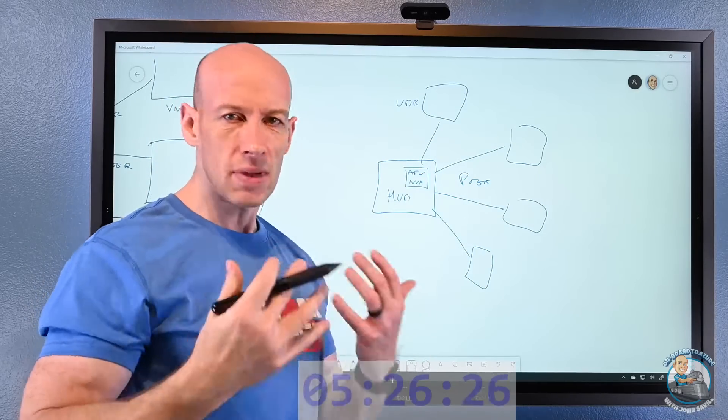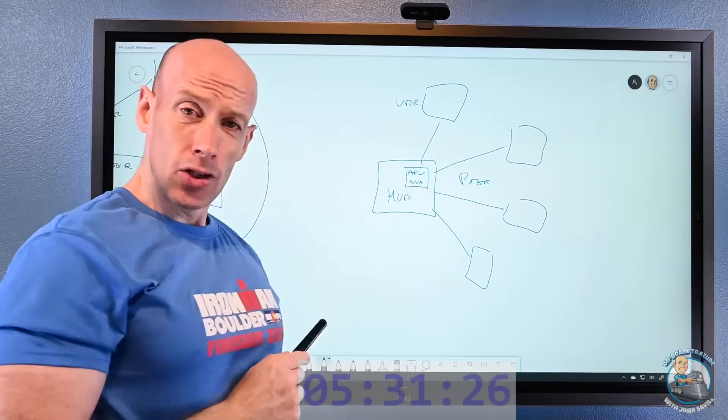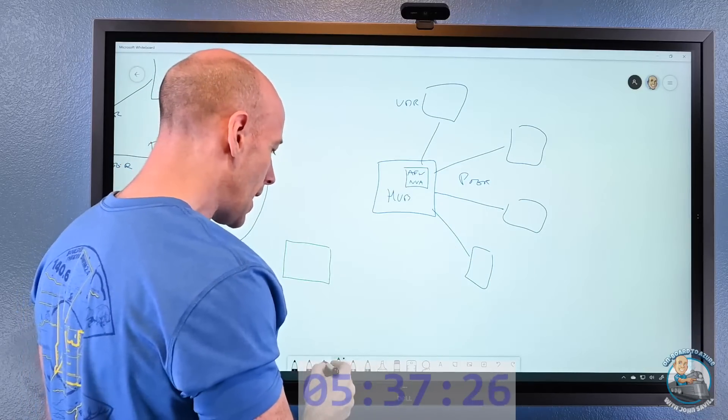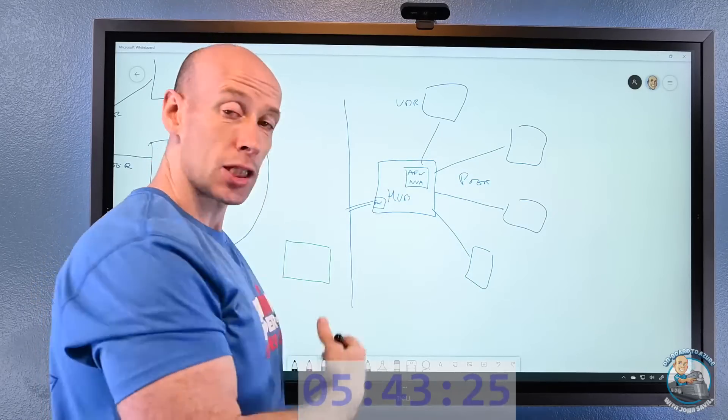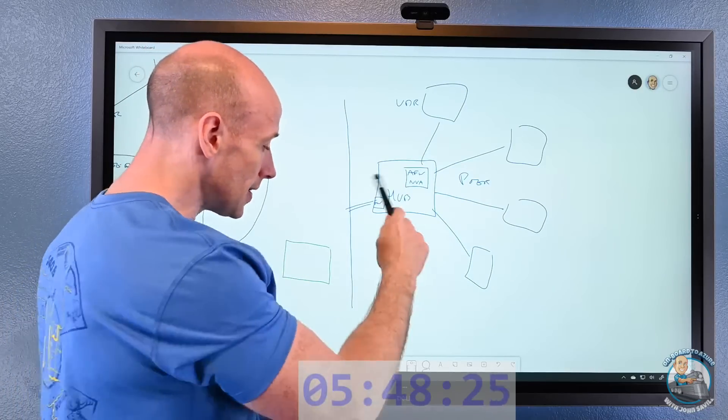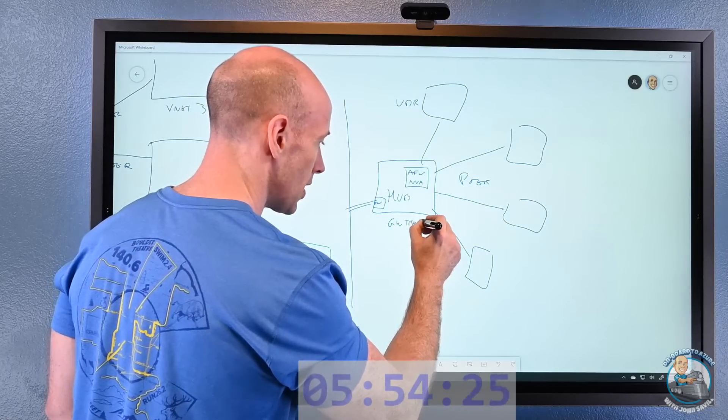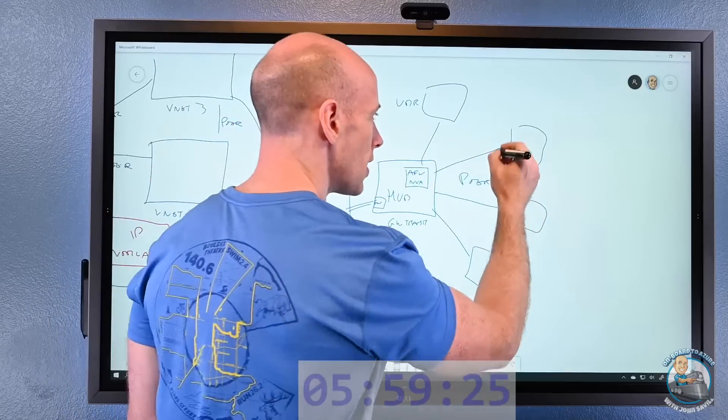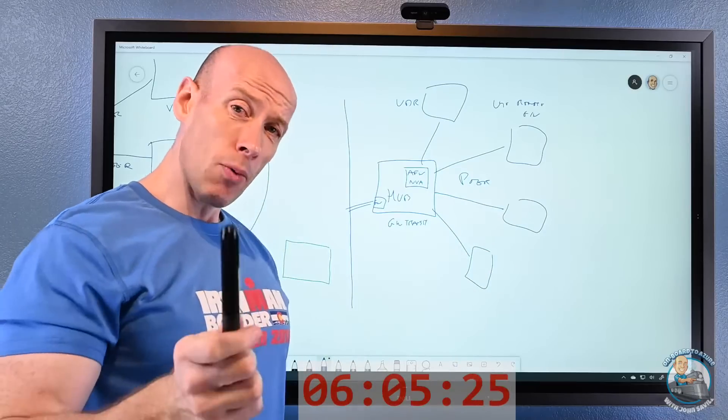Another thing I can do here: imagine there were on-premises connections, maybe I had some kind of gateway in the hub—maybe it's ExpressRoute, maybe it's site-to-site VPN. The other cool thing I could do is in the hub I can enable gateway transit. So I can turn on gateway transit on this end of the peering connection, and on these ones I'm going to say use remote gateway.